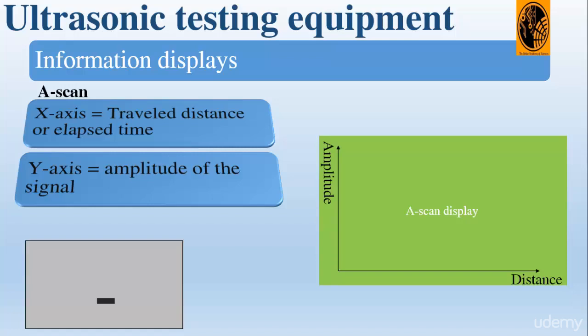The A-scan method is the most widely used and can be displayed on most standard ultrasonic instruments. You can see on this animation, we place the probe, we direct the beam on the defect and we get this presentation, which is the amplitude distance. You have the travel distance on the x-axis and the amplitude of the signal on the y-axis.